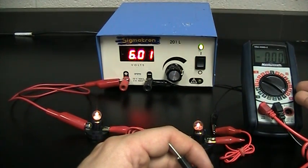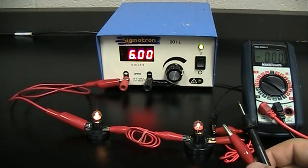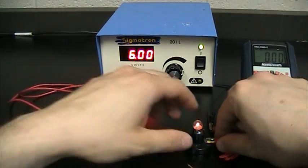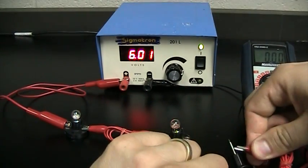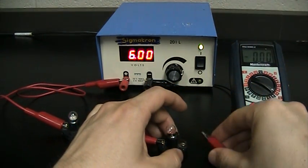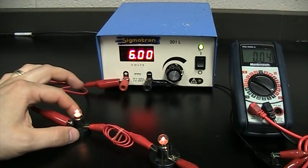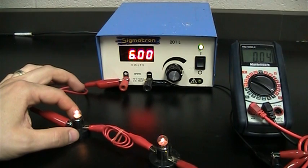First of all we have this currently set up as an ammeter, and so to measure the current or the flow of coulombs going through the circuit we're going to need to break the circuit and insert our ammeter in. If you recall from our previous studies our amperage was about 0.06 then and it's now dropped down to 0.04.